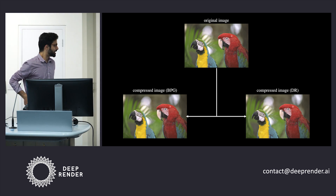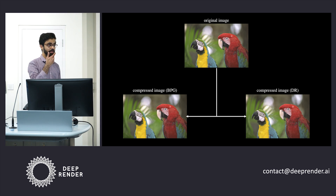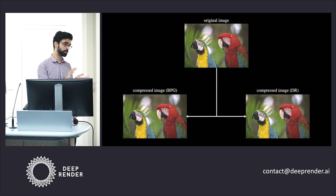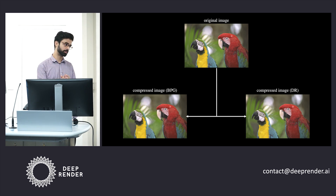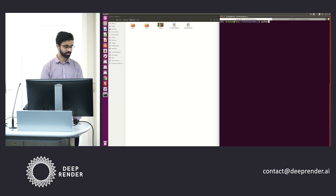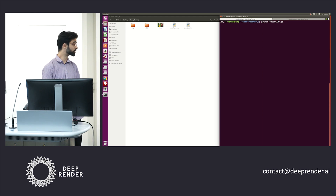Thank you very much for that, Chris. As Chris mentioned, we'll take the zeroth image of the codec data set. We'll go ahead and compress it with the deBrenda encoder first, show you the bit stream, and show you the decoded image. We'll then go ahead and do that with the BPG encoder, and show you the bit stream and the decompressed image. So with that in mind, let's go ahead and call the deBrenda encoder.